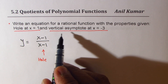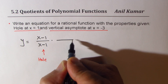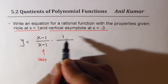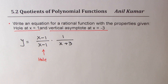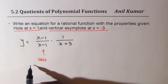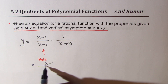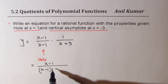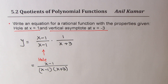When we say vertical asymptote at x equals -3, it means the denominator is 0 for x equals -3. So x plus 3 will be a factor in the denominator. Therefore, the answer will be (x minus 1) over ((x minus 1) times (x plus 3)). So that becomes the solution of this particular question.